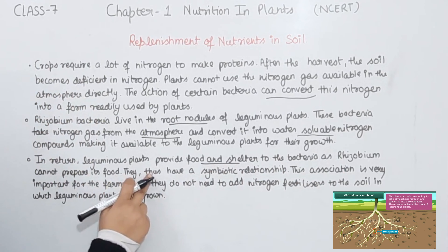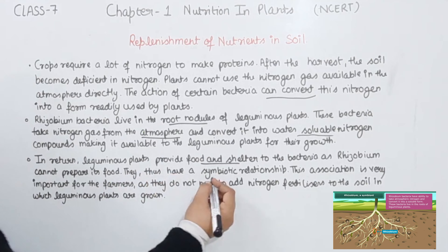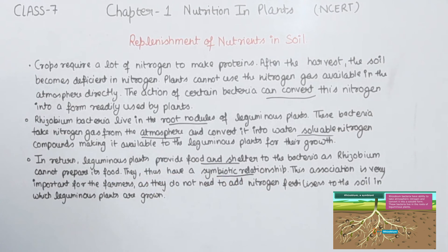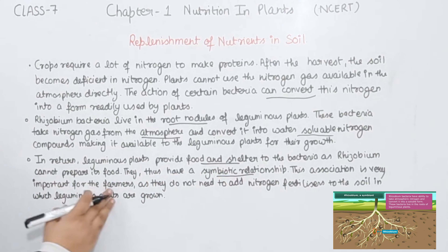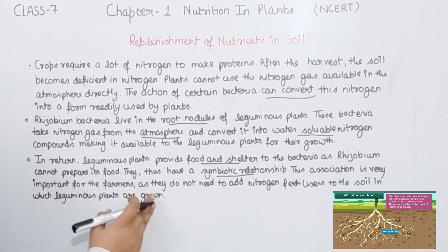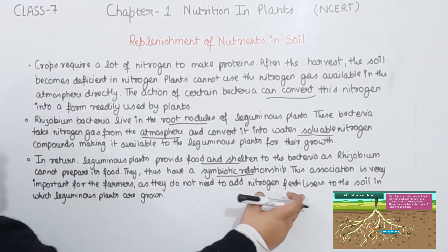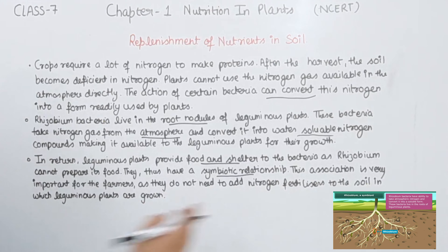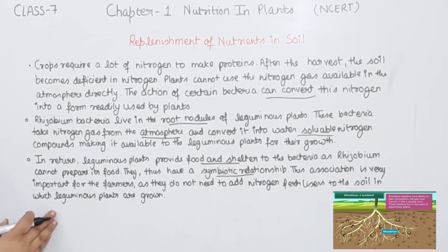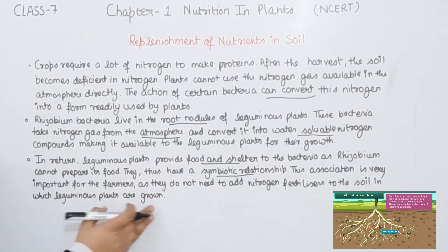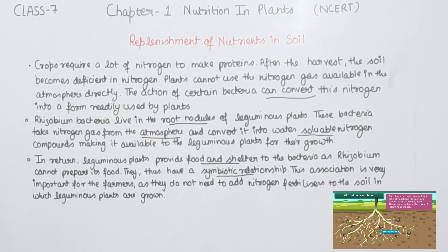In return, leguminous plants provide food and shelter to the bacteria, as rhizobium cannot prepare its own food. They thus share a symbiotic relationship. This association is very important for farmers, as they do not need to add nitrogen fertilizer to the soil in which leguminous plants are grown.